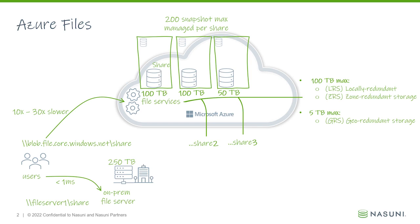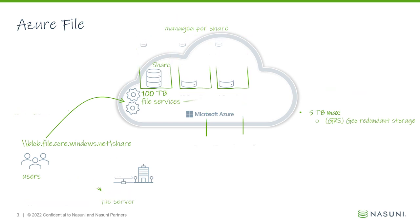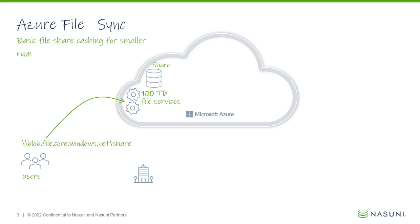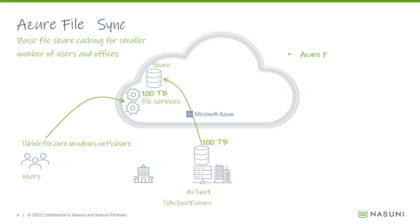Now onto Azure File Sync, which is a Windows Server plugin that can help address some of the challenges when using Azure Files. The Azure File Sync agent is installed on a Windows Server to enable edge caching for a single Azure file share. A single Azure File Sync server cannot be used to connect to multiple Azure file shares — keep this in mind as we continue to build out this architecture. Using our previous example, this customer has decided to deploy an Azure File Sync server called azSync1 and is presenting the share locally from that server.